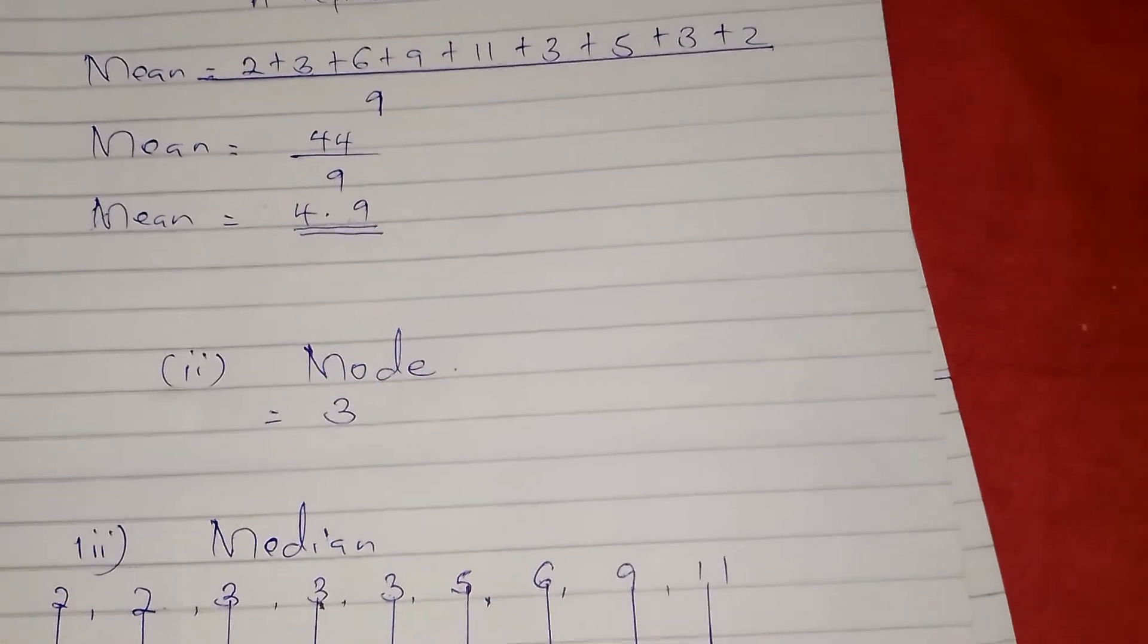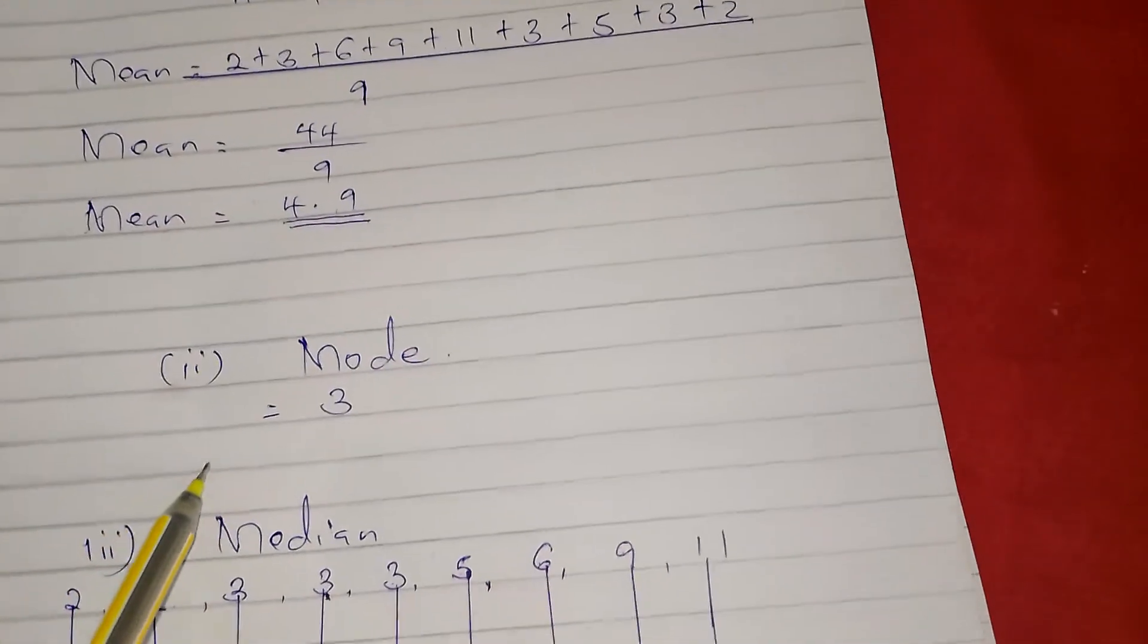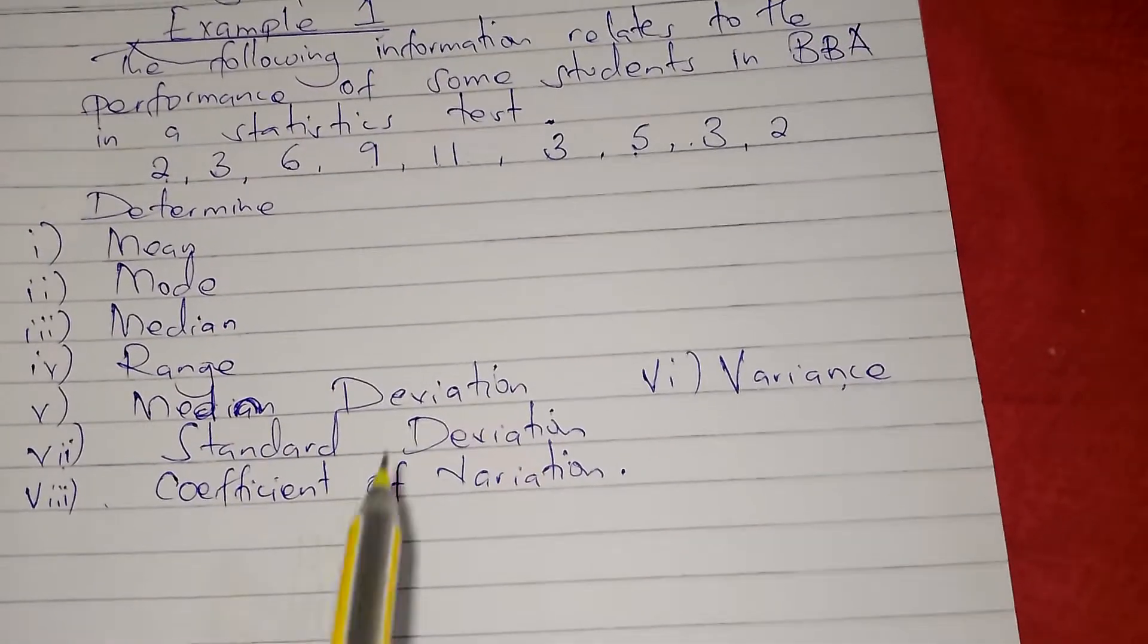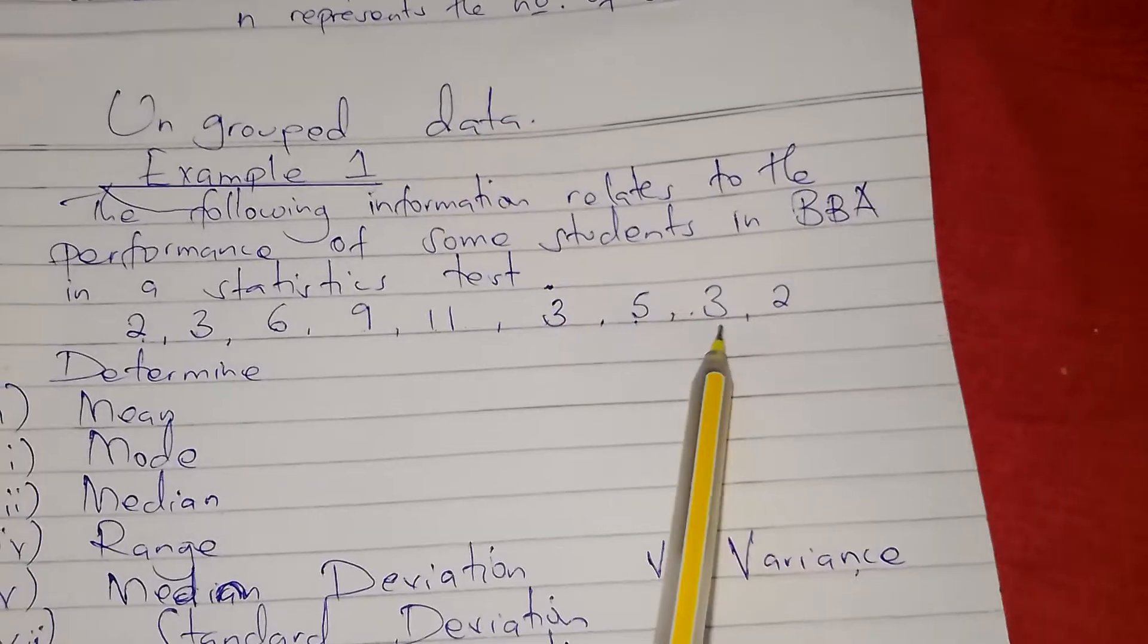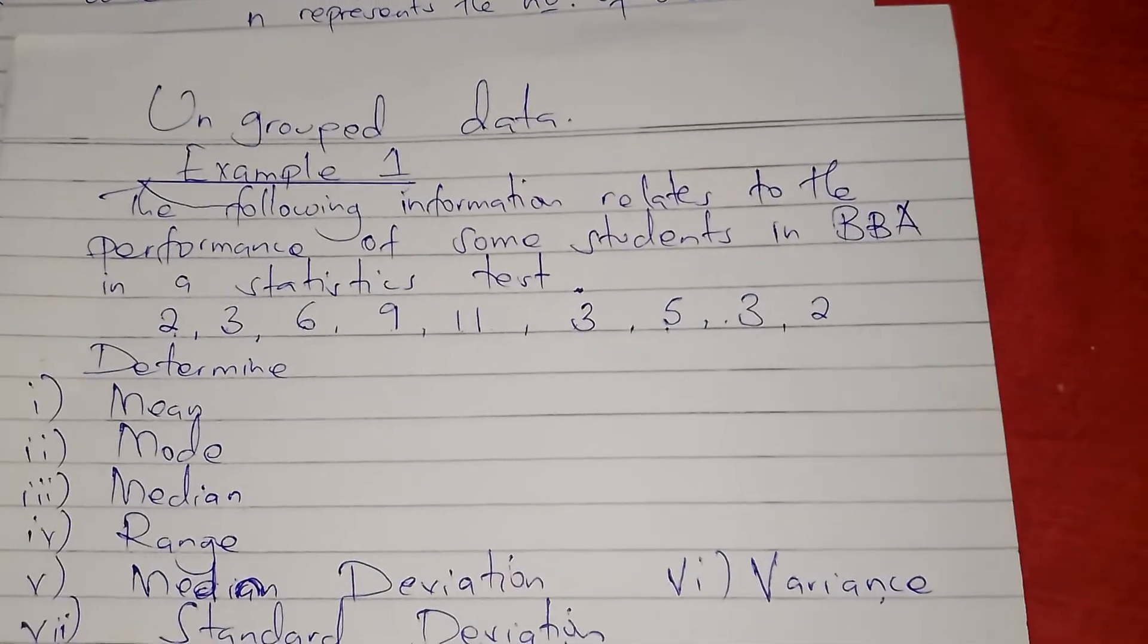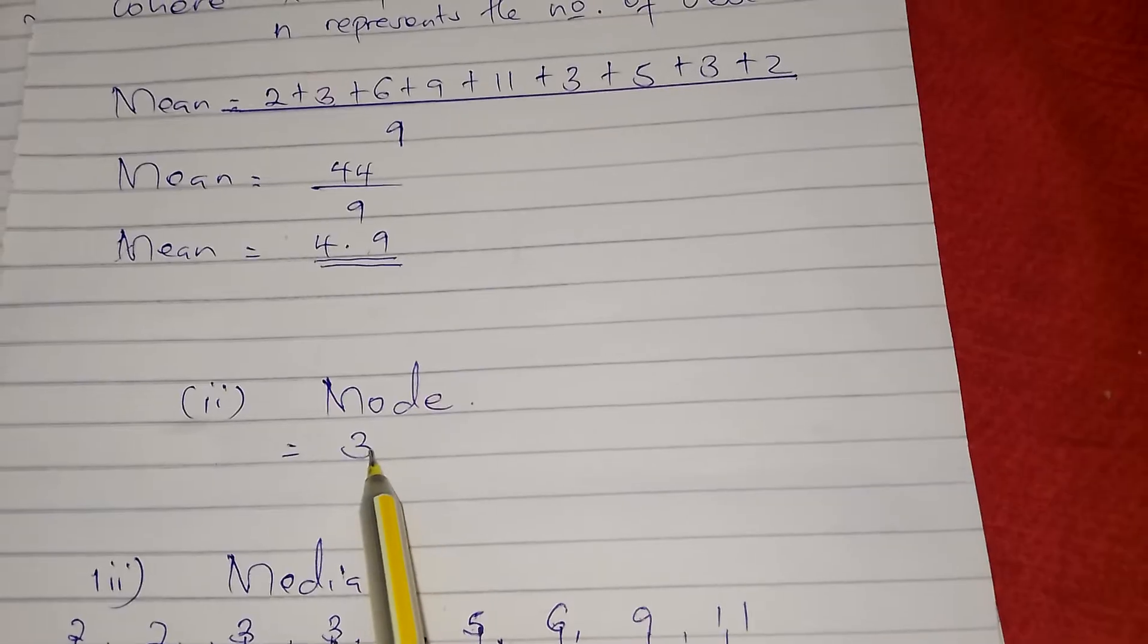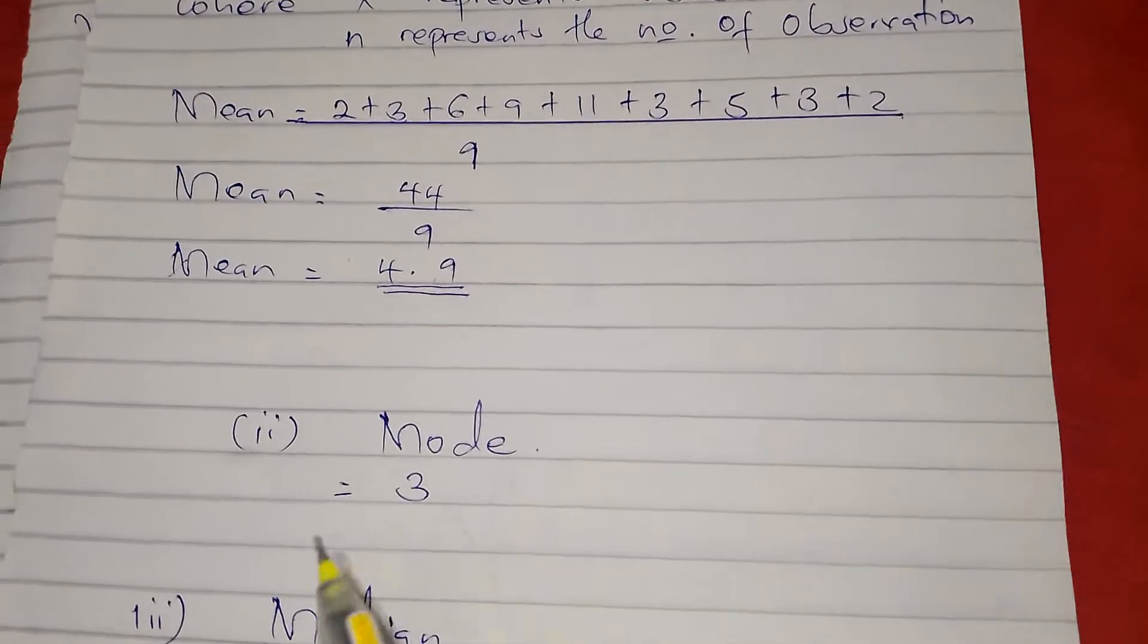Roman two: they wanted us to determine the mode. Mode for ungrouped data refers to that item that appears more than once, or that appears the most times, that appears more frequently than other items. We are seeing 3 here, 3 here, and then 3 here. It has appeared three times. There is no other number that has appeared more than three times, so 3 becomes our mode.